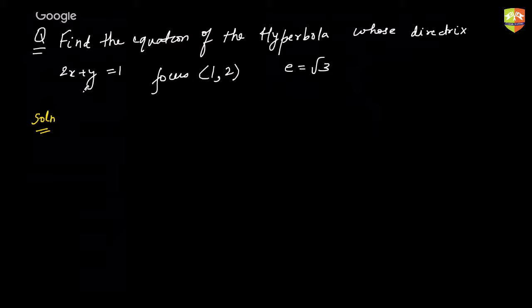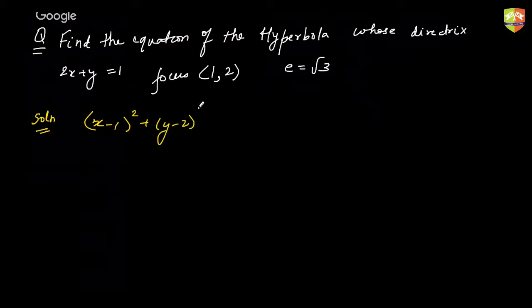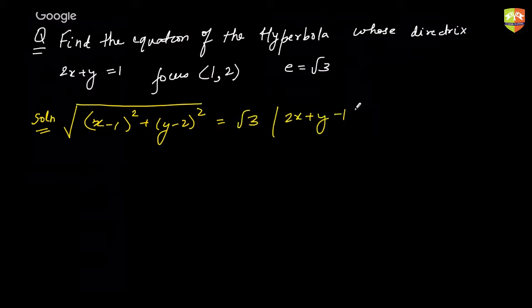Please solve and type your response in the chat box. We'll use the basic definition: the distance from the focus should be e times the distance from the directrix. Let the point be (x, y), so the distance from (1, 2) is e times the distance from the directrix.